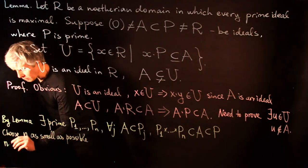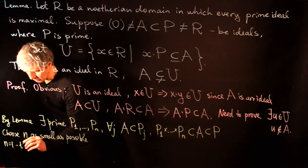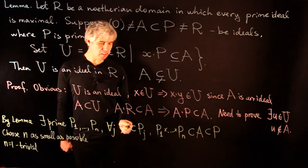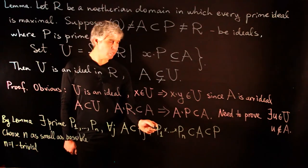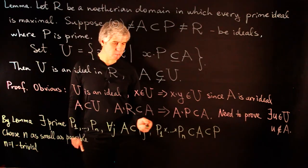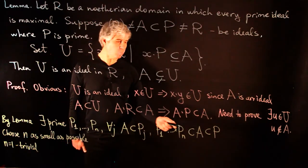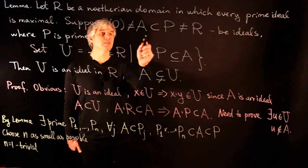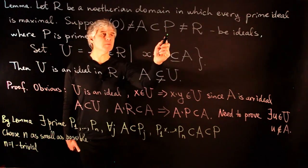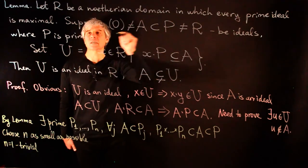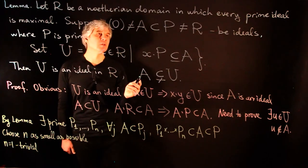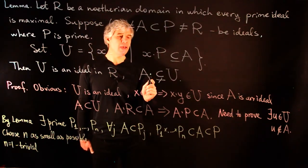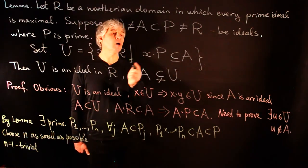The case n = 1 is trivial. In this case A ⊆ P₁ and P₁ ⊆ A, so A = P₁ is a prime ideal. Then P₁ ⊆ P, and since prime ideals are maximal, we must have P = P₁. Then U = R, and the claim of the lemma follows from our assumption that P ≠ R.